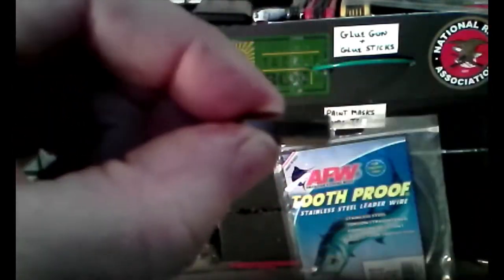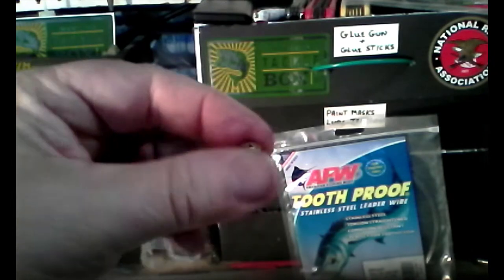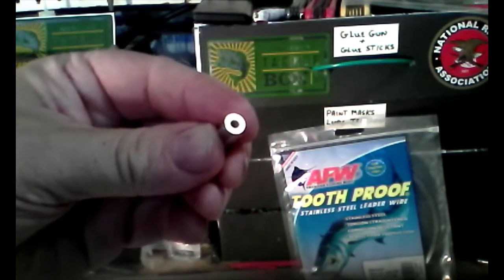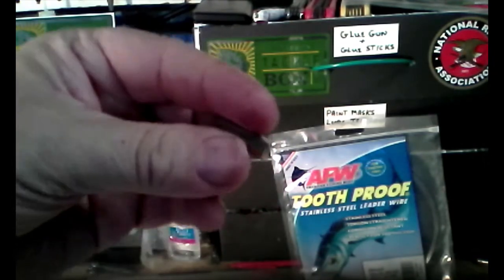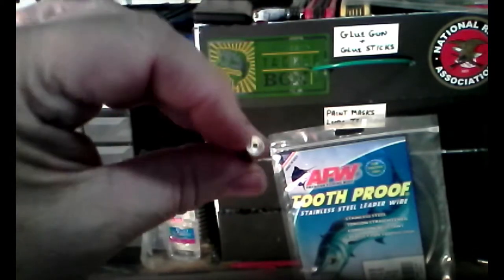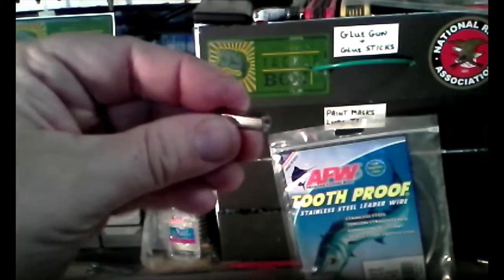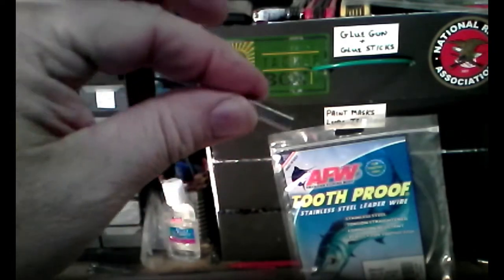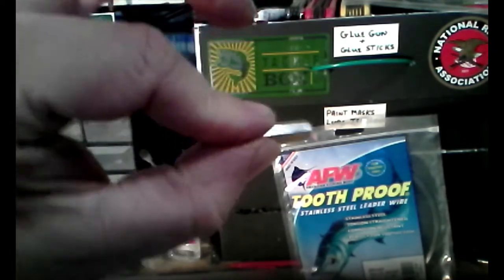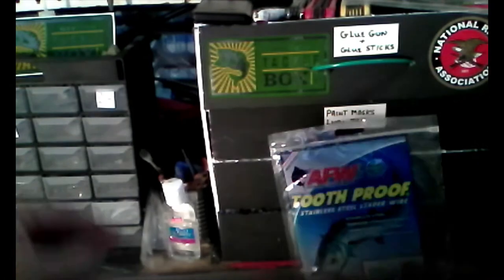You can use different things too. This is a bolt of some sort. I don't know where it came from but it's threaded here. And I drilled a little hole at this end so I could put the wire through it. And these work great. I've made quite a few lures out of these.